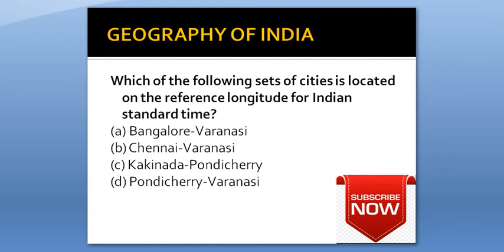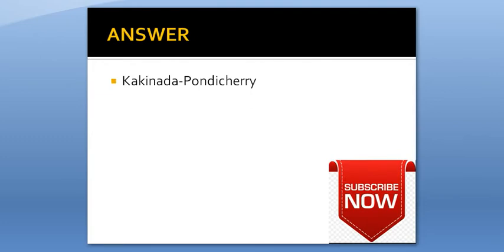Which one of the following sets of cities is located on the reference longitude for India's standard time? Option A: Bengaluru, Varanasi. Option B: Chennai, Varanasi. Option C: Kakinada, Pondicherry. Option D: Varanasi. Answer is Kakinada, Pondicherry.